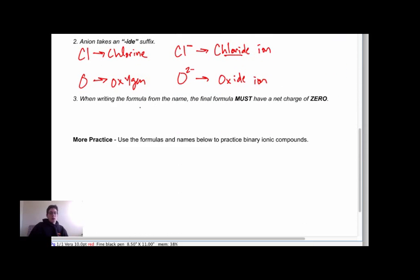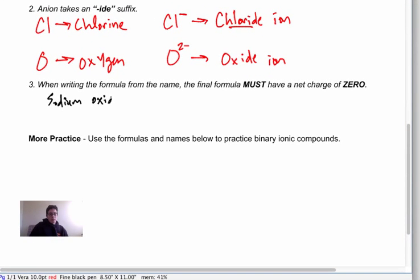The third thing, when we are writing a formula from the name, the formula must have a net charge of zero. So let me give you a quick example here. Let's say we're doing sodium oxide this time. Sodium oxide.